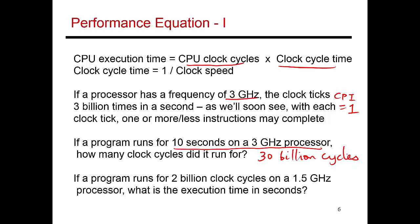Now if a program runs for 2 billion clock cycles on a 1.5 gigahertz processor, the execution time would be determined by this equation over here. So it's the number of clock cycles, which is 2 times 10 to the 9 times the cycle time, which is nothing but 1 by clock frequency, which is 1.5 times 10 to the 9. So these two get canceled out. This gives me a result of 1.33. So this program runs for 1.33 seconds.